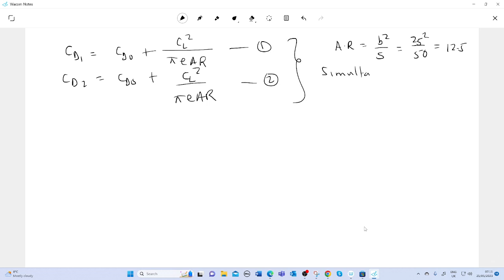Therefore we can cancel CD0. So our CD1 minus CD2 equals (CL1² minus CL2²) over π e AR. Eventually we can pull out the Oswald factor from the equation, and that becomes e equals 1 over π AR multiplied by (CL1² minus CL2²) over (CD1 minus CD2).